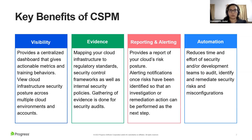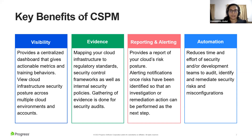How does CSPM address these threats? The four main benefits are visibility, evidence, reporting and alerting, and automation. In terms of visibility, it gives you a centralized dashboard that provides a comprehensive view of your infrastructure, security posture, and actionable metrics. When it comes to evidence, it allows you to compare regulatory standards and your existing security frameworks, and find out the delta between these to gather evidence of misconfigurations or security risks in your posture strategy.